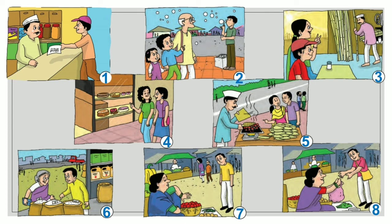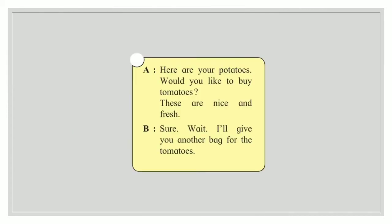Tomatoes and potatoes — two pictures are there: seven and eight. Look at picture number 8: the person who is buying tomatoes and potatoes is having two bags. So this conversation is related to picture number 8. We will put number 8 to that conversation.